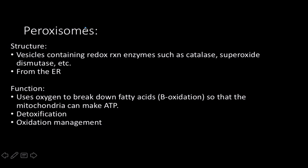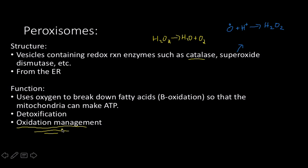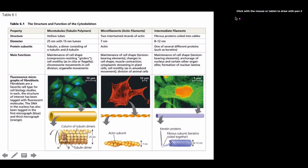Next are peroxisomes — also not part of the endomembrane system. Structurally they are vesicles containing redox reaction enzymes such as catalase and superoxide dismutase. Superoxide dismutase takes highly reactive superoxide and converts it into hydrogen peroxide, while catalase takes hydrogen peroxide and converts it into water and diatomic oxygen. Their function is any type of oxidation reaction within a cell. One notable example is beta-oxidation, the process by which cells take fat and break it down into a form the mitochondria can use to make ATP.